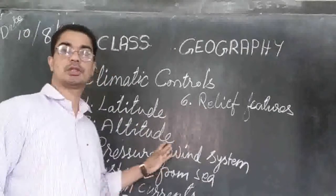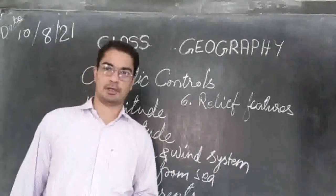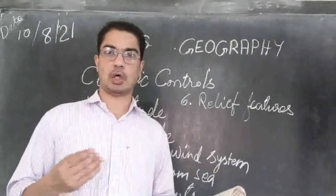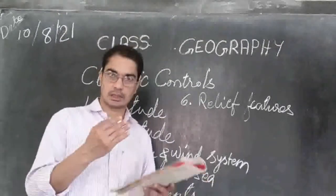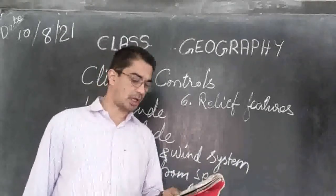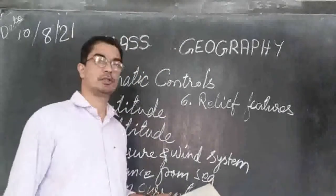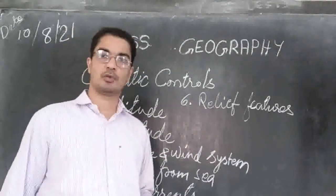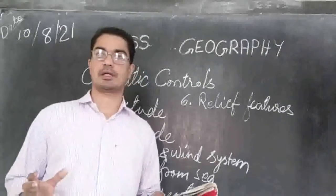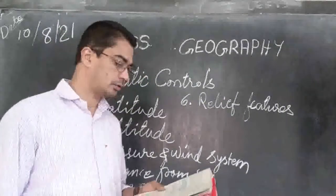Due to the curve of the earth — the earth is not a plain place but is round, in an oval shape — the amount of solar energy received varies according to latitude. Because the shape of the earth is curved, the amount of solar energy that each place receives varies according to the latitude.